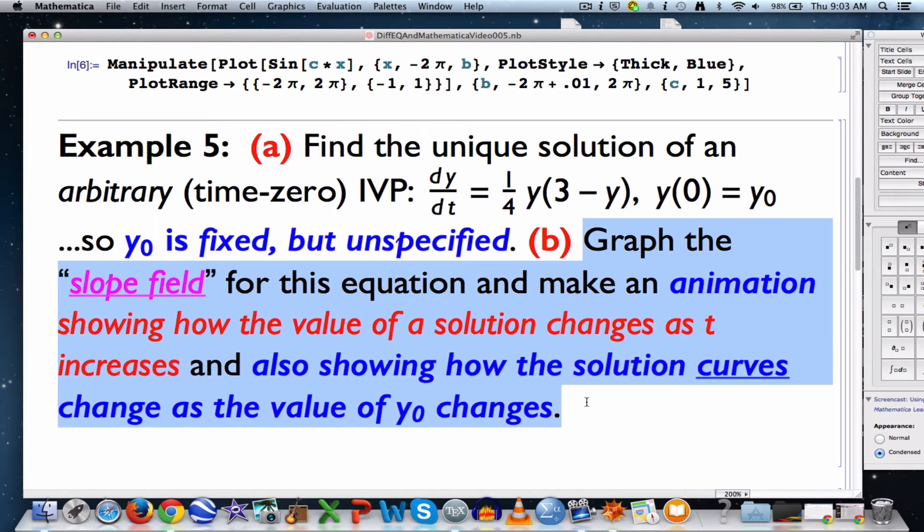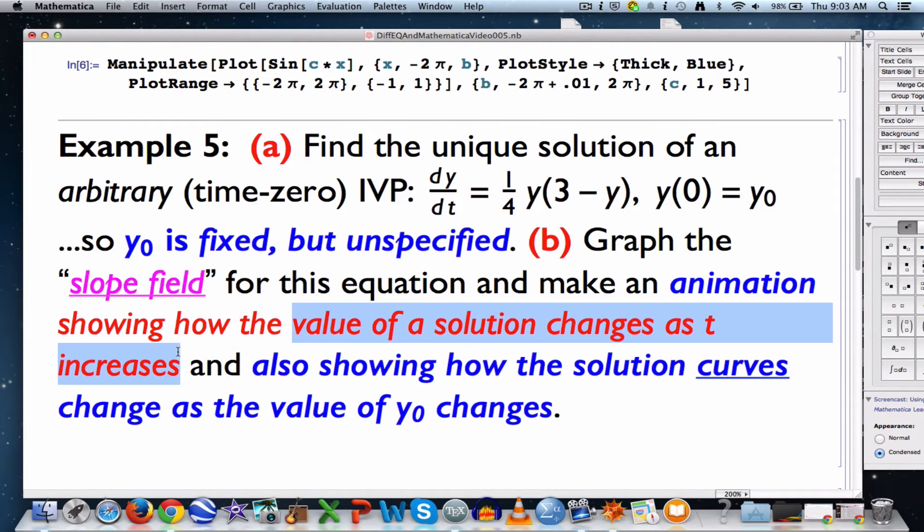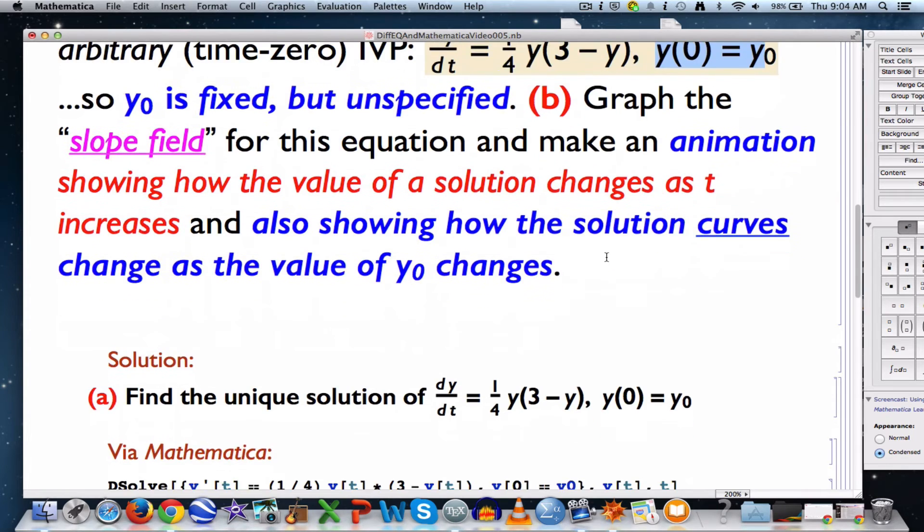It is still a unique solution that we're going to find with DSolve. We're also going to graph that solution in the slope field, and now the important part: make an animation in two ways, showing how the value of the output changes as t increases, showing the graph get traced out, and more importantly showing how the solution curves themselves change as the initial value of y changes. y sub 0 is really the y intercept because it's going through the point t equals 0, y equals y0.